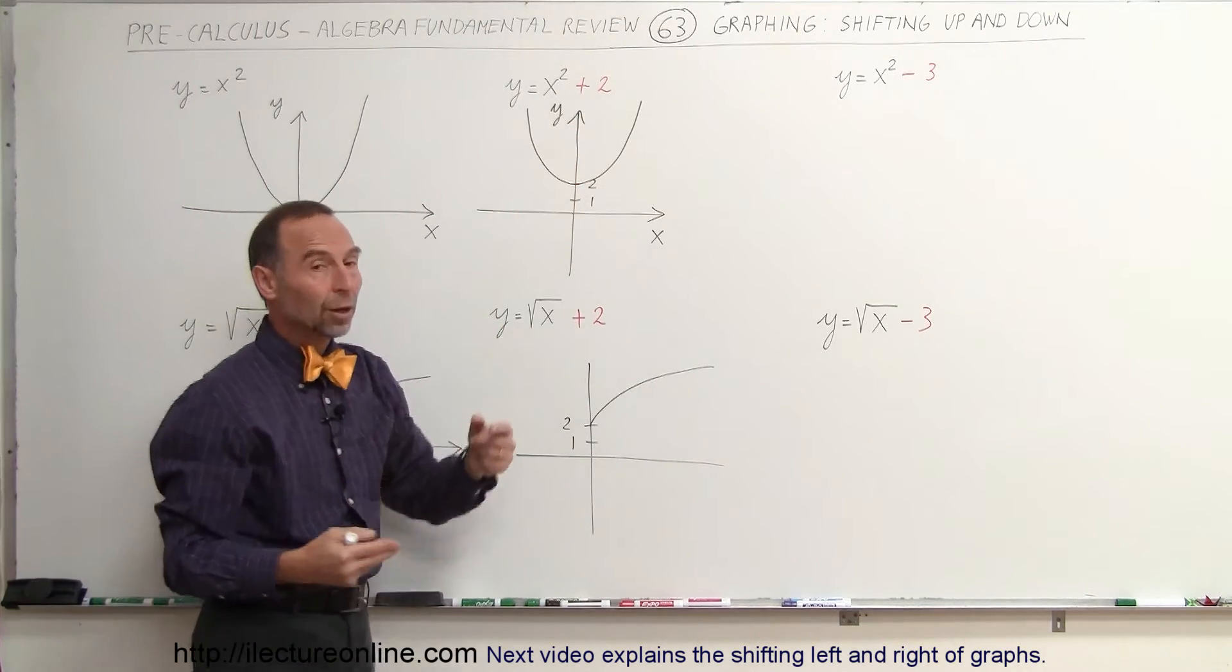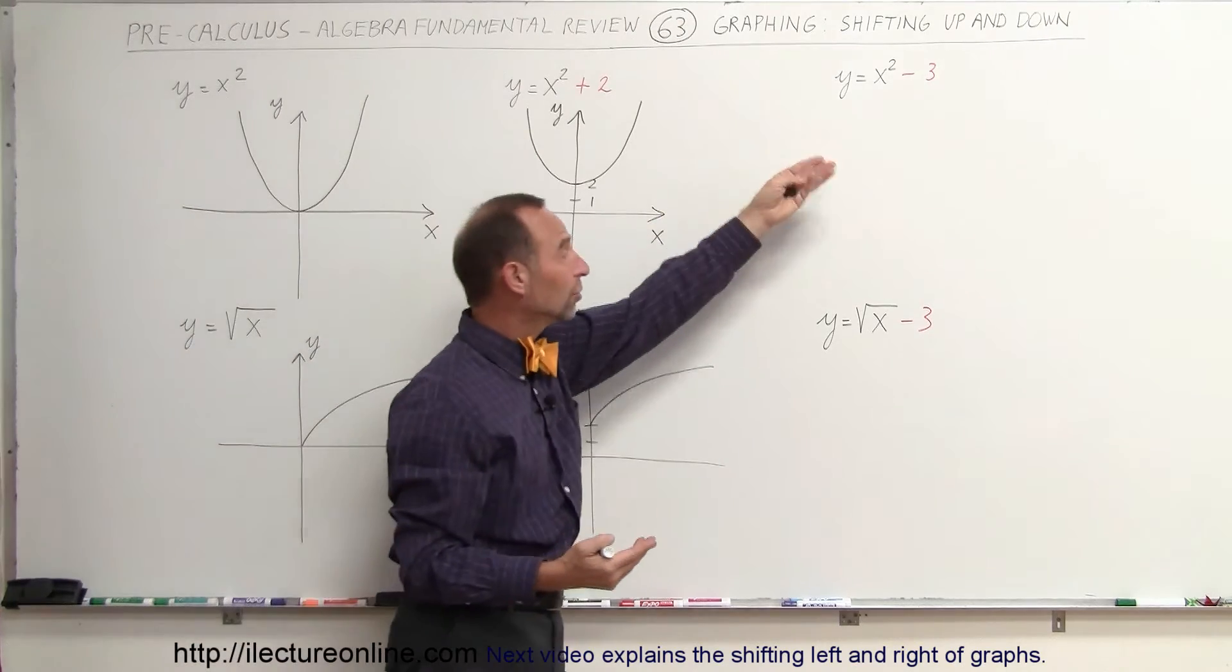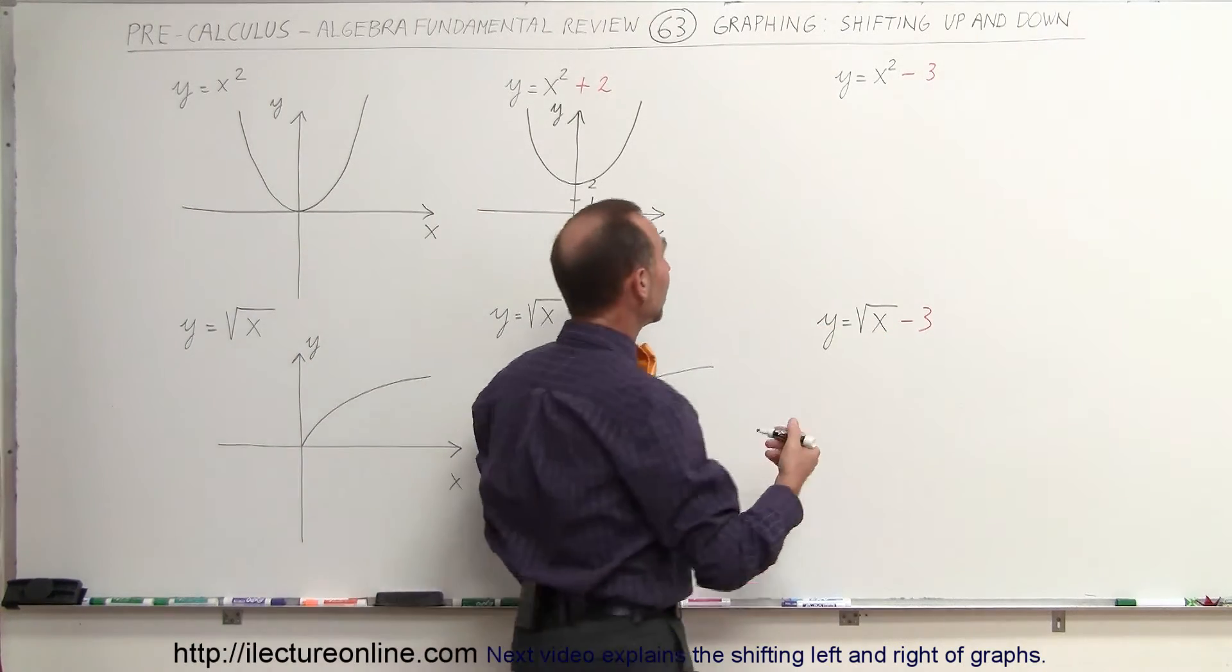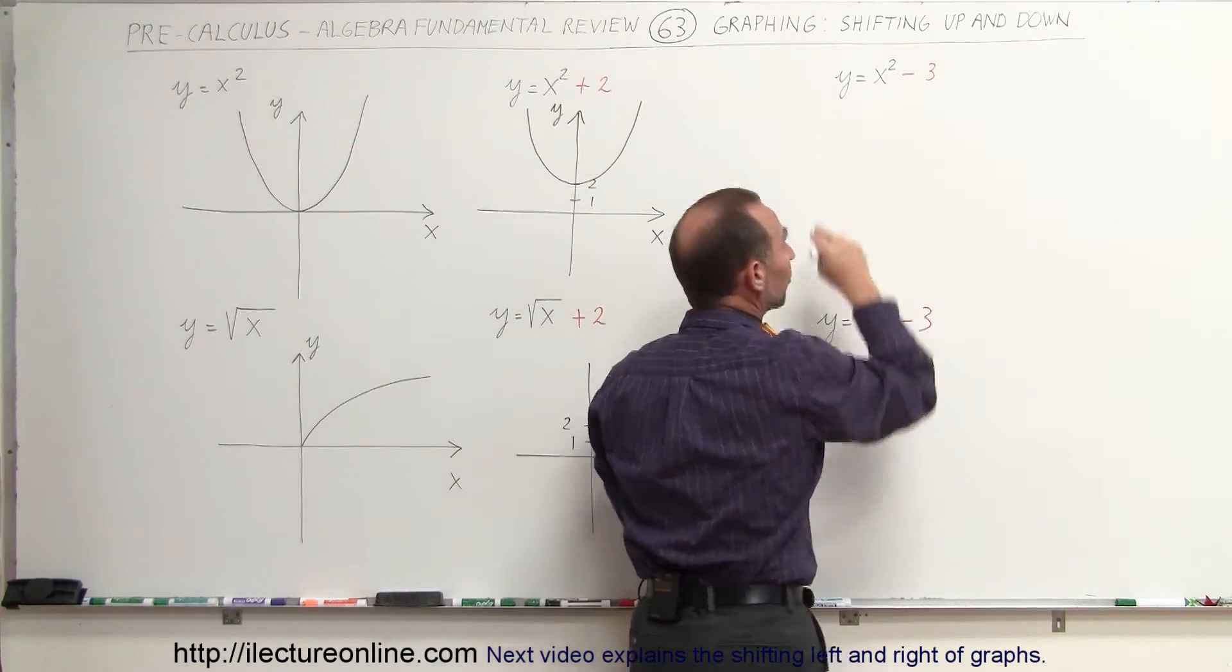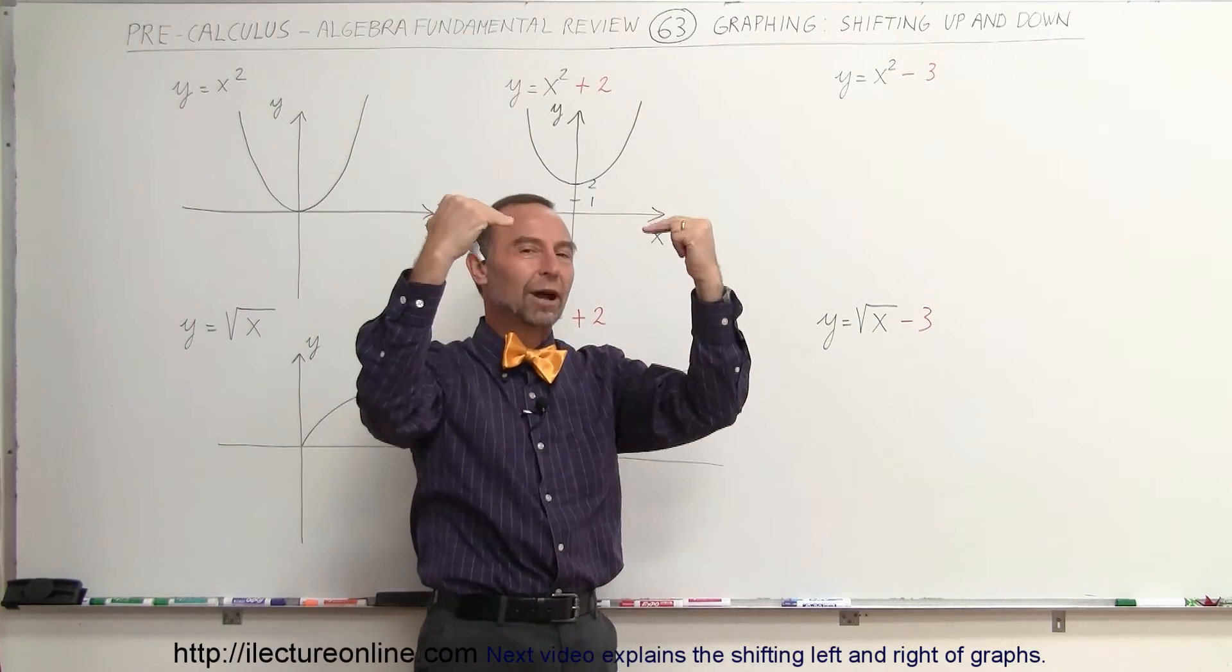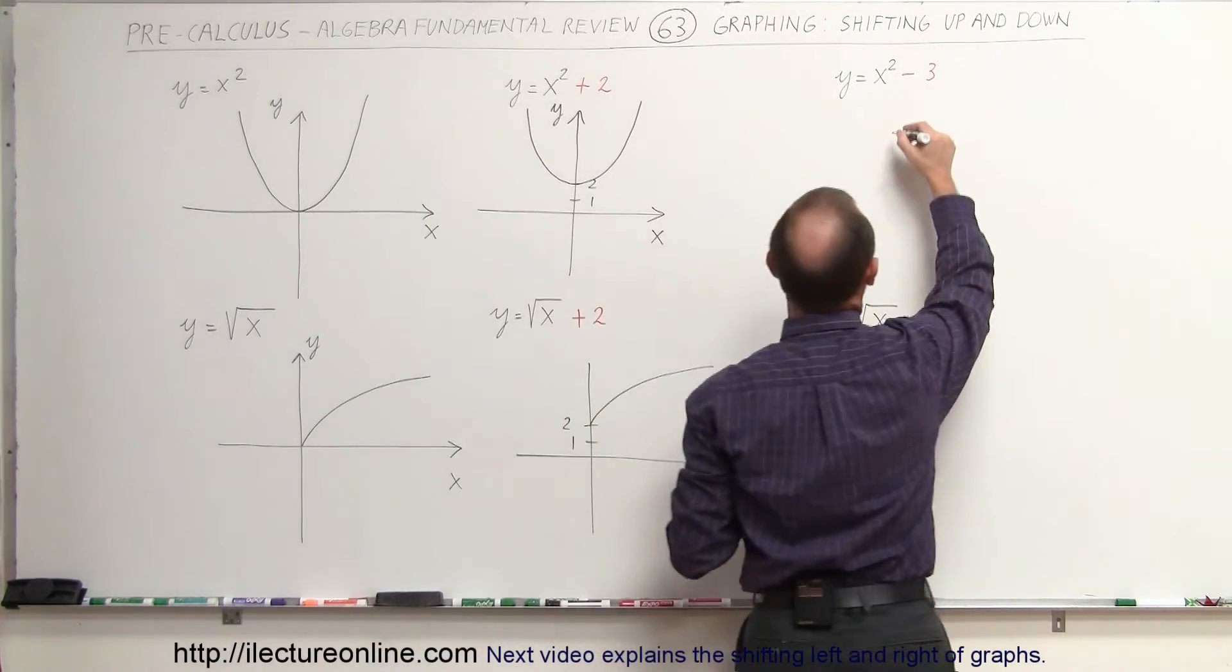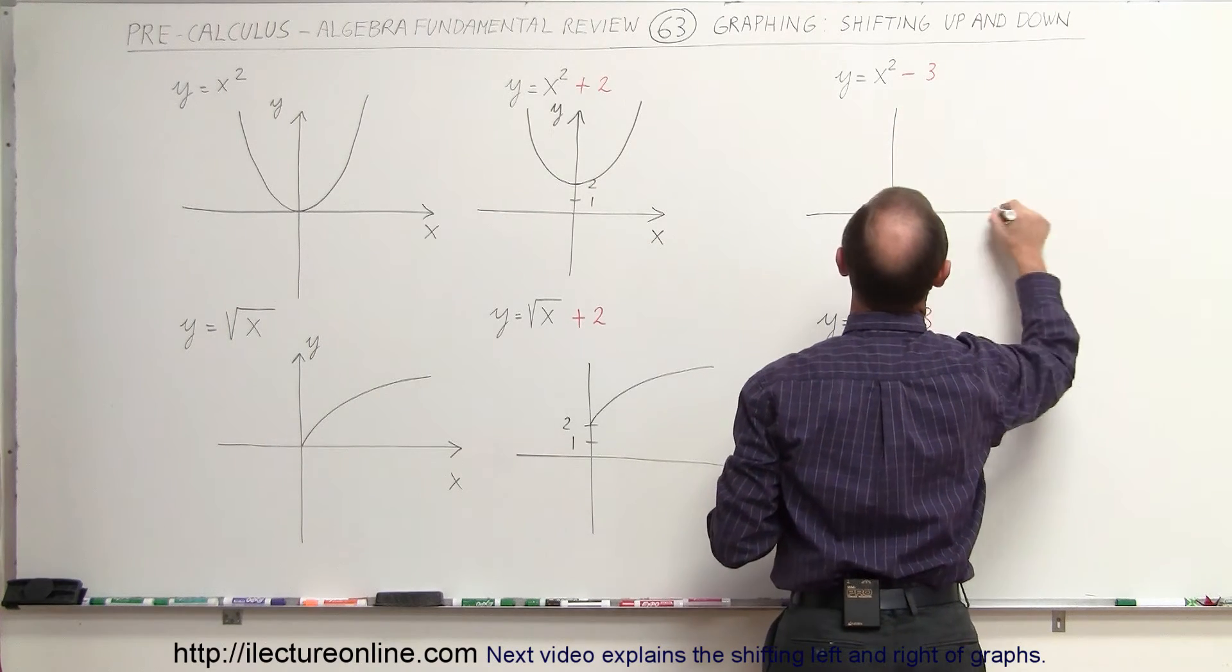What if you subtract? What if it's minus 3, minus 3? Well, what happens then is that whatever the value was before, it is now 3 less than before, which means the whole graph drops by 3 units. And what that looks like, it looks as follows.